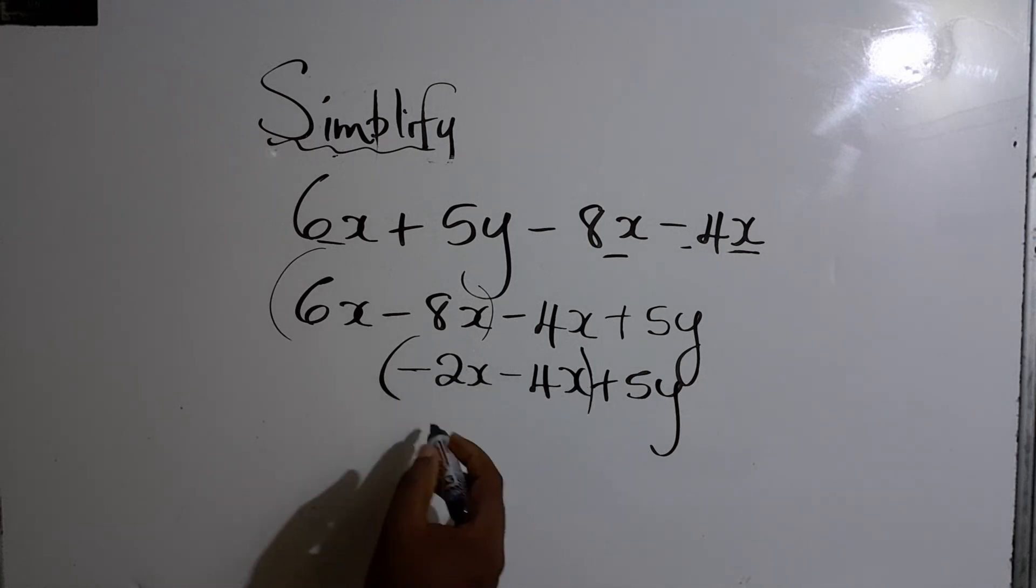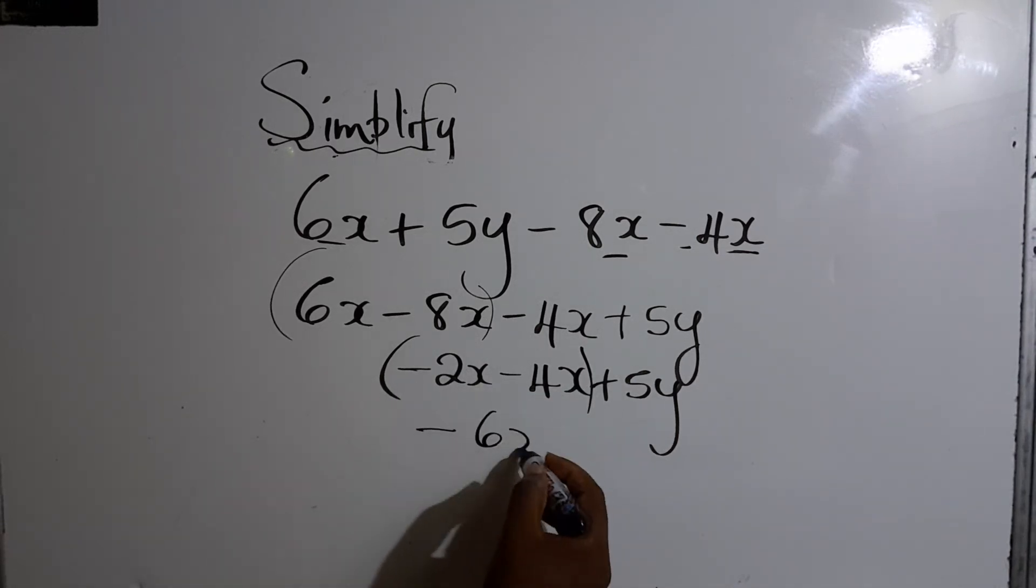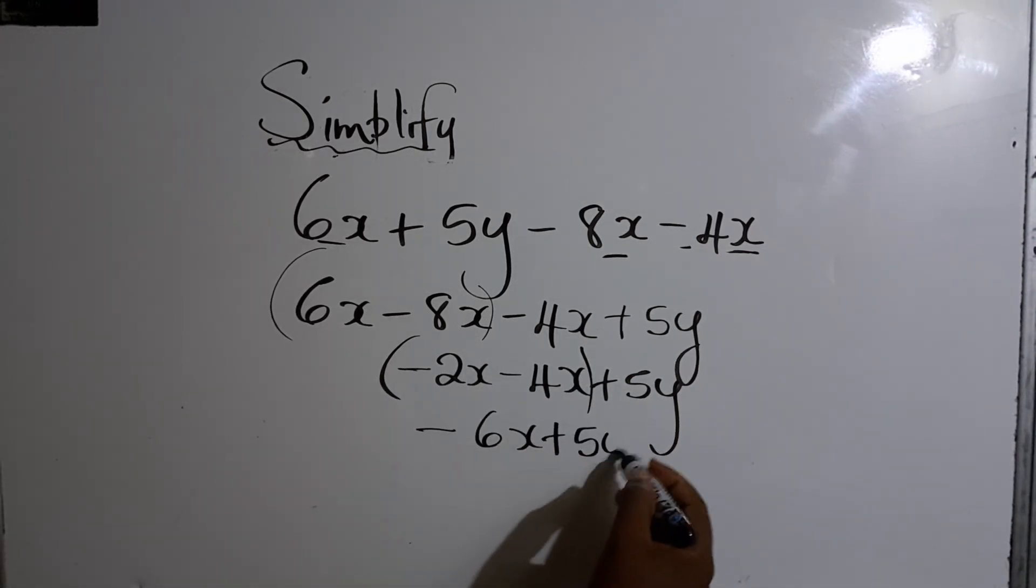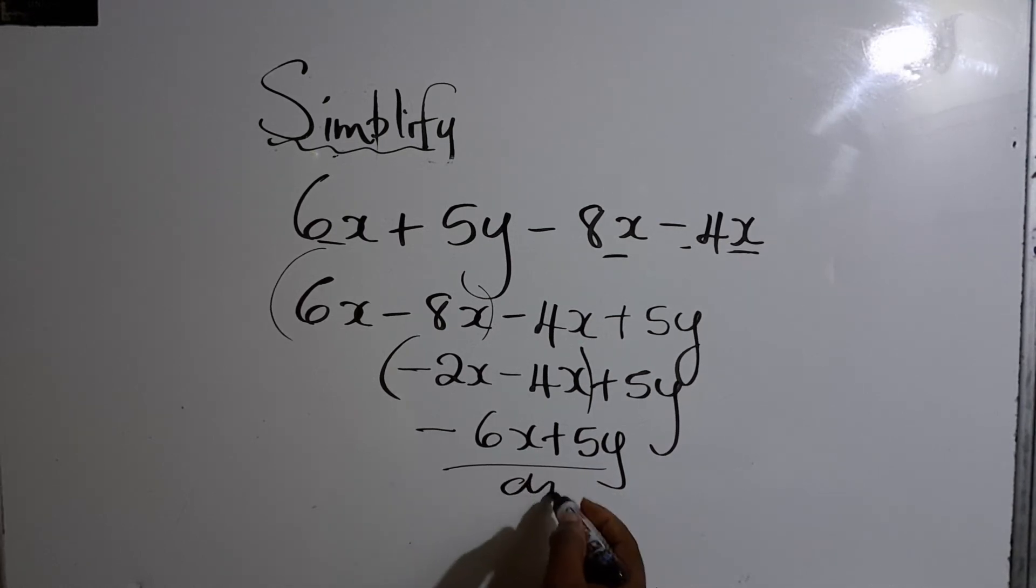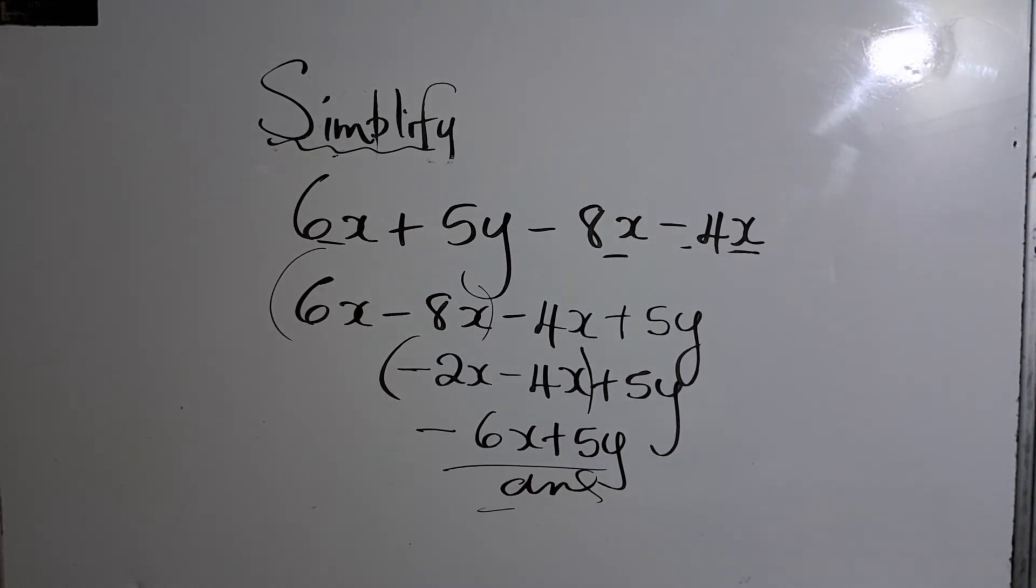Negative 2X minus 4X. Both of them are negative. So we add and keep the sign. And of course, there's nothing to cancel the Y. So we have negative 6X plus 5Y.